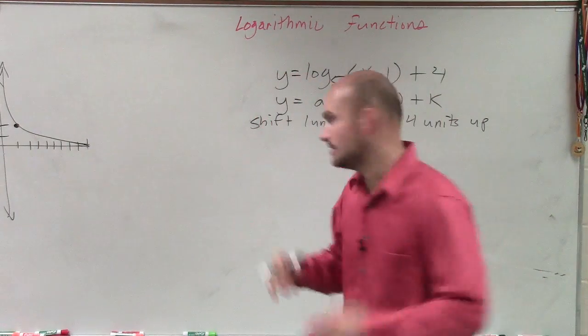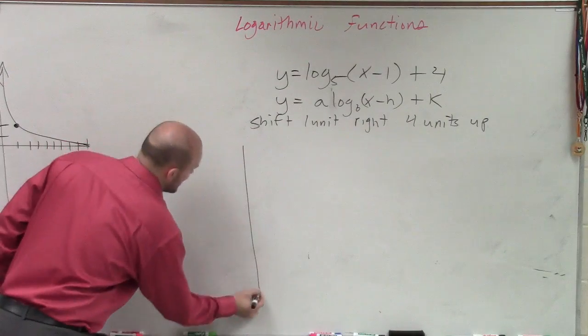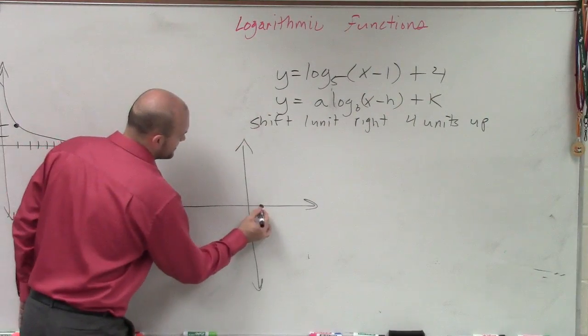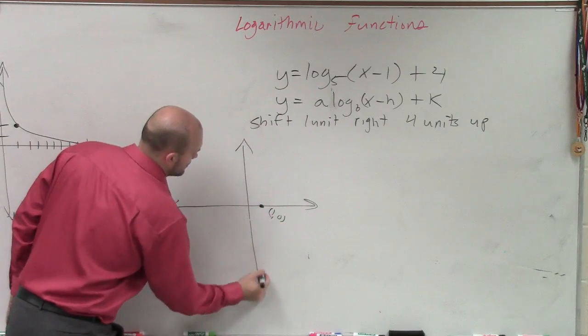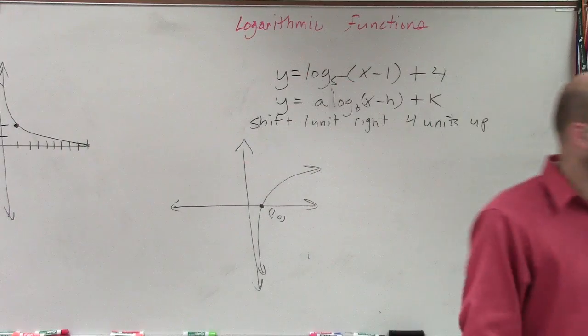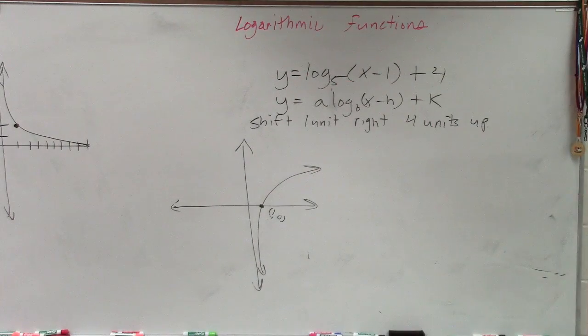The next thing is, let's go to the parent graph of a logarithm. This is, again, the first thing that we graphed. When looking at the parent graph of a logarithm, we know that it crosses at the x-intercept at 1 comma 0.